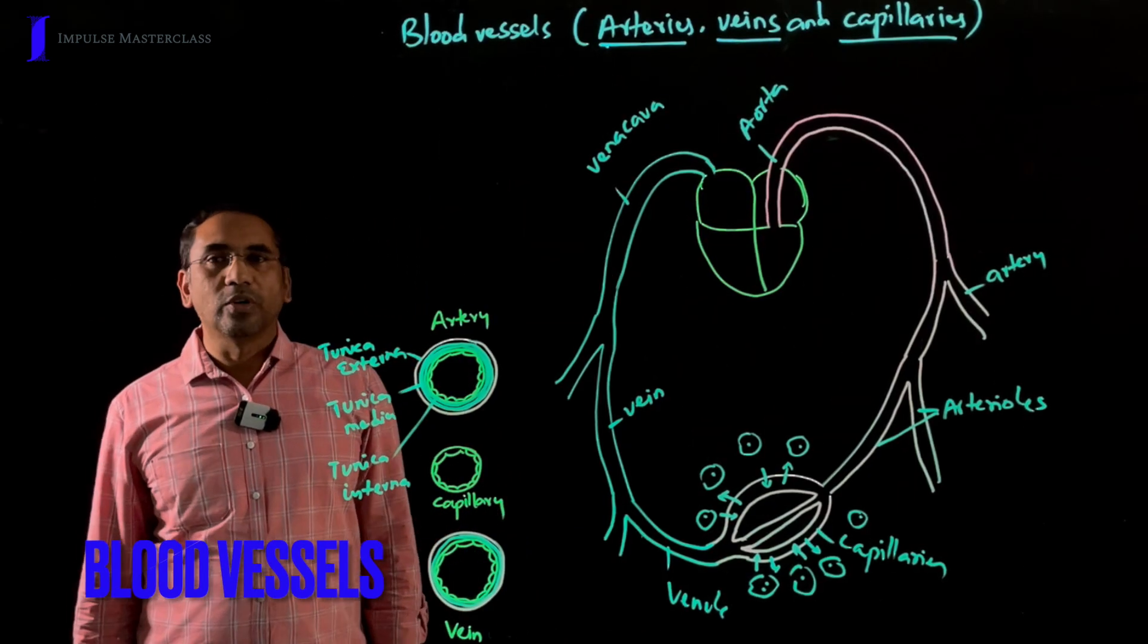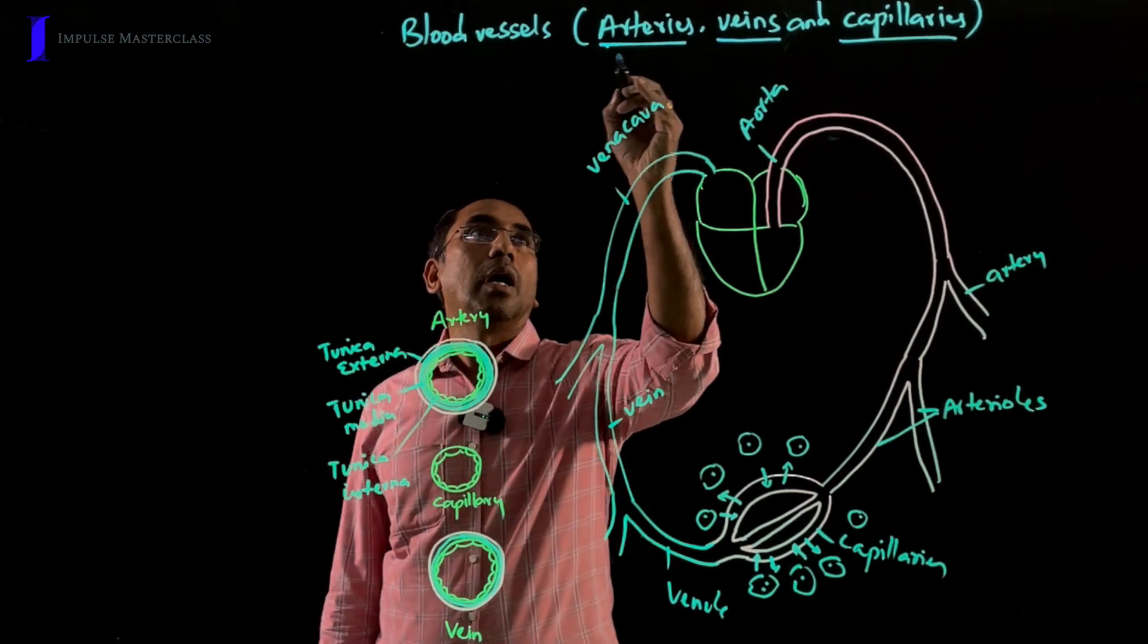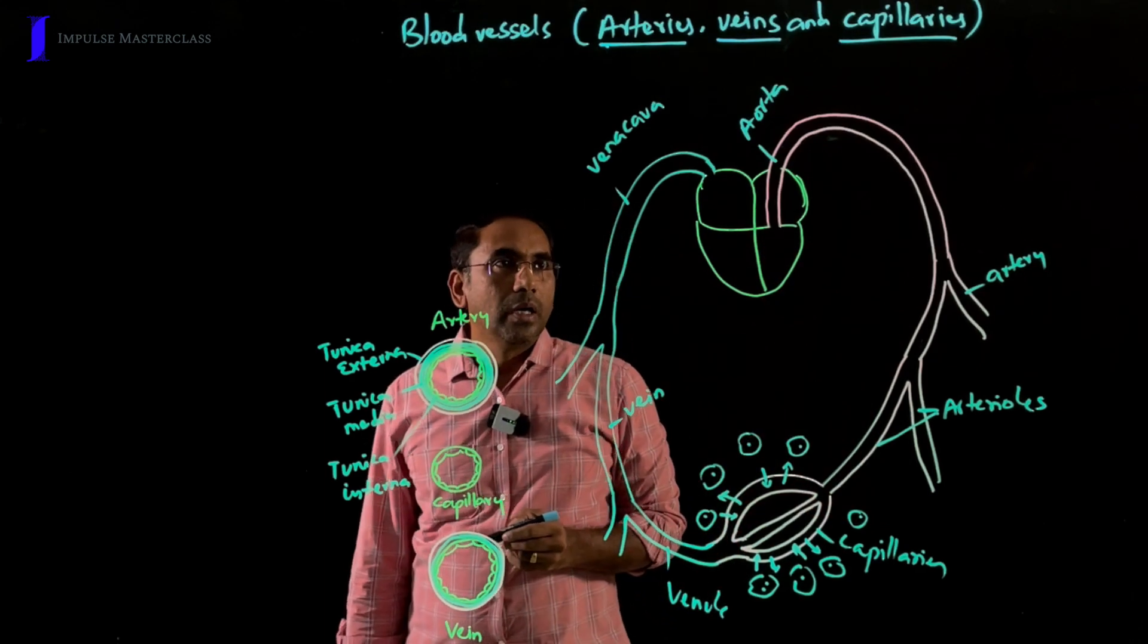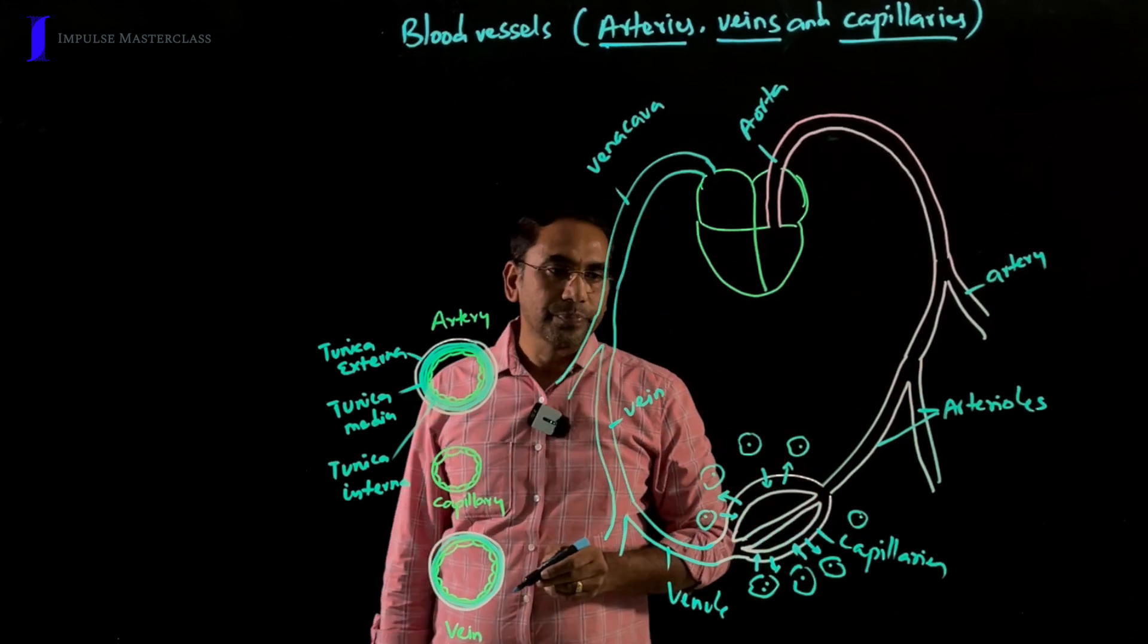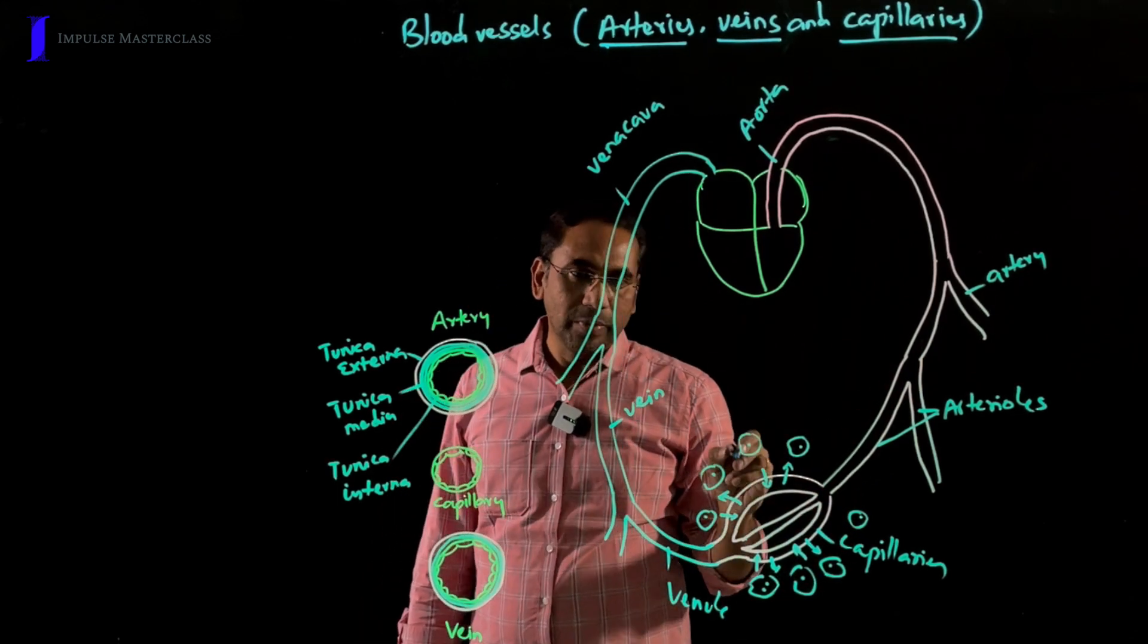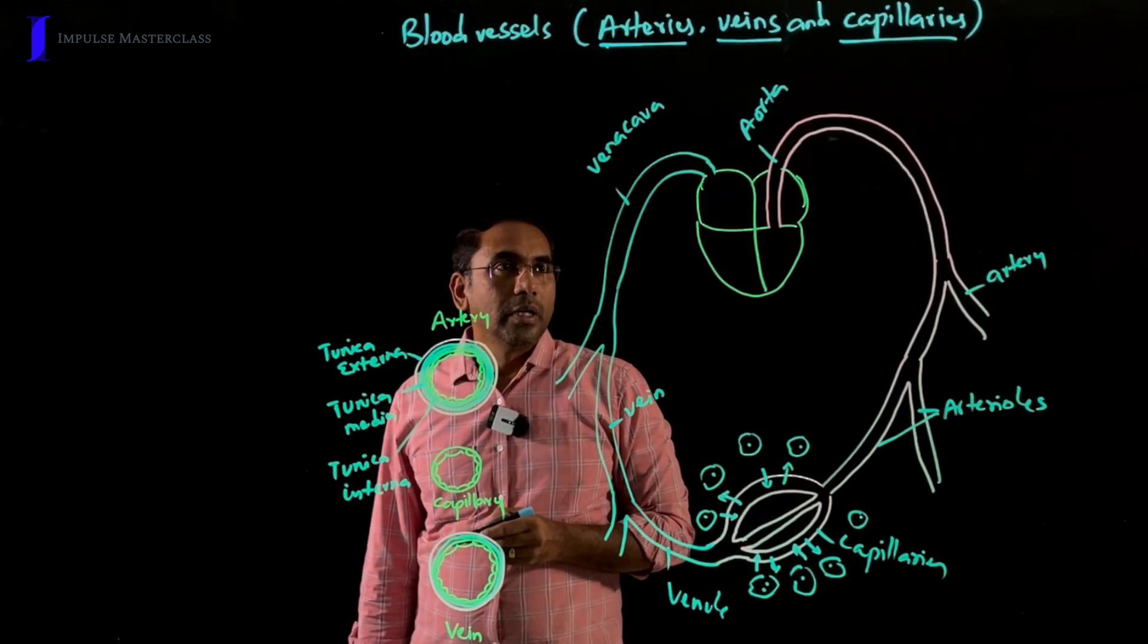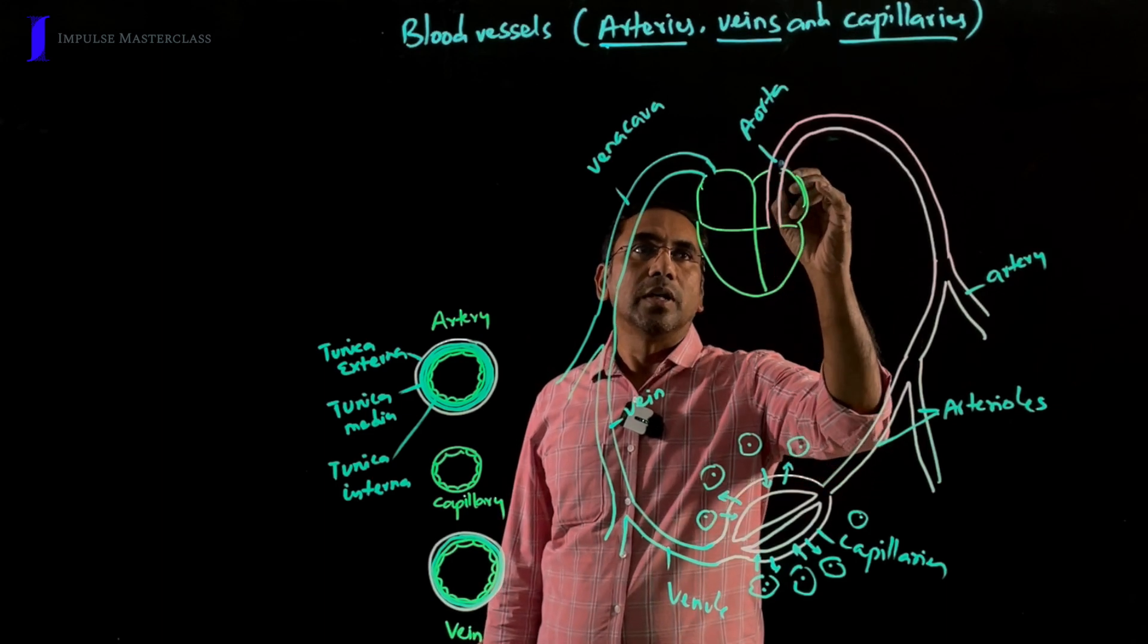Let's have a brief account of blood vessels. Here, blood vessels constitute arteries, veins, and capillaries. You know that arteries carry blood away from the heart towards the tissues. And veins collect blood from tissues and carry it towards the heart. The largest vessel arising from the heart is aorta.